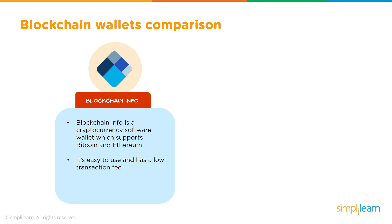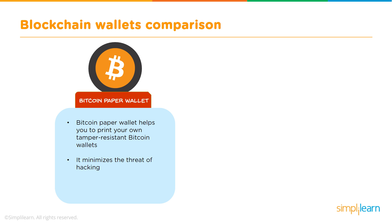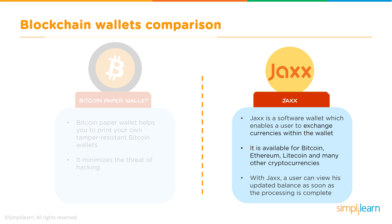Now let's do a comparison. Blockchain.info is a cryptocurrency wallet supporting Bitcoin and Ethereum; it is easy to use with a low transaction fee and exposes an API for custom wallets. Ledger Nano is a hardware wallet offering high security for Bitcoin, Ethereum, and Litecoin, with support for multiple accounts. Bitcoin Paper Wallet helps you print your own tamper-resistant Bitcoin wallet, minimizing hacking threats. Jaxx is a software wallet enabling currency exchange within the wallet, available for Bitcoin, Ethereum, Litecoin, and many others, with real-time balance updates.